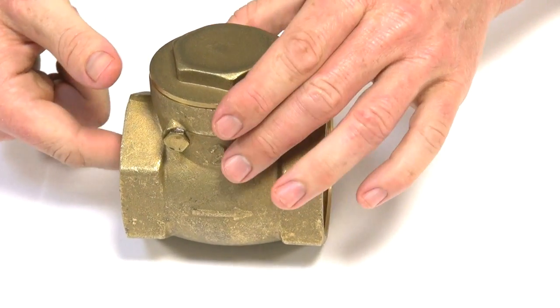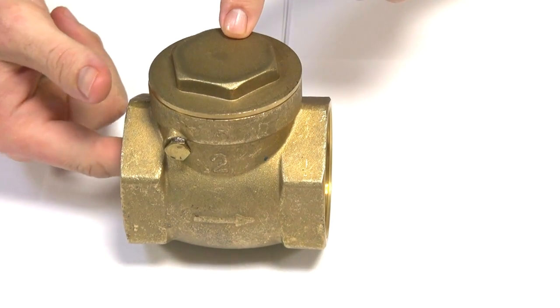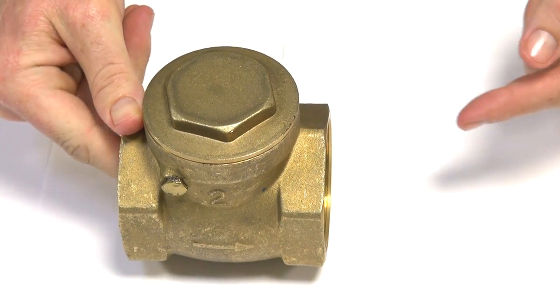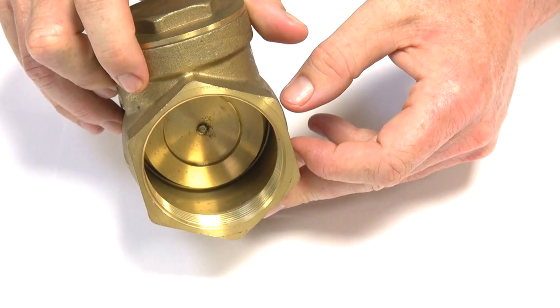So again I'll go through direction of flow. Flow comes along, pushes the gate, goes up, flow will pass through. Any pressure in the other direction comes through, pushes the gate and it will seal. As you can see down there.